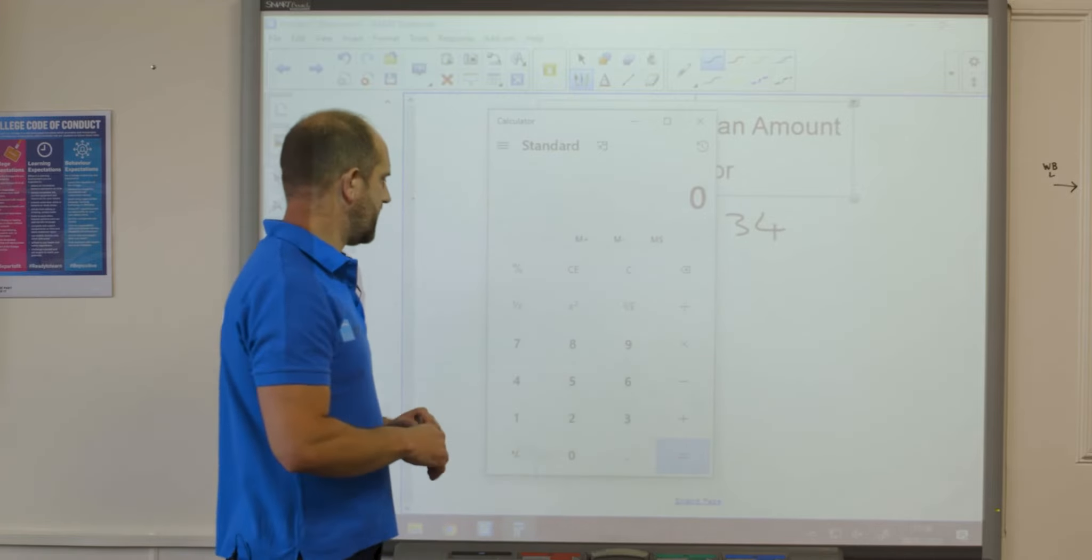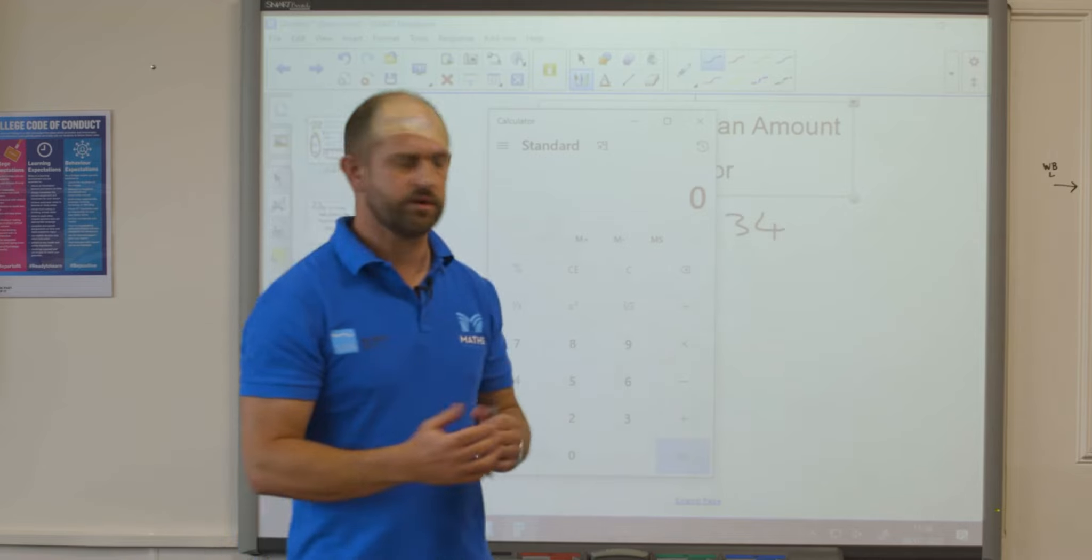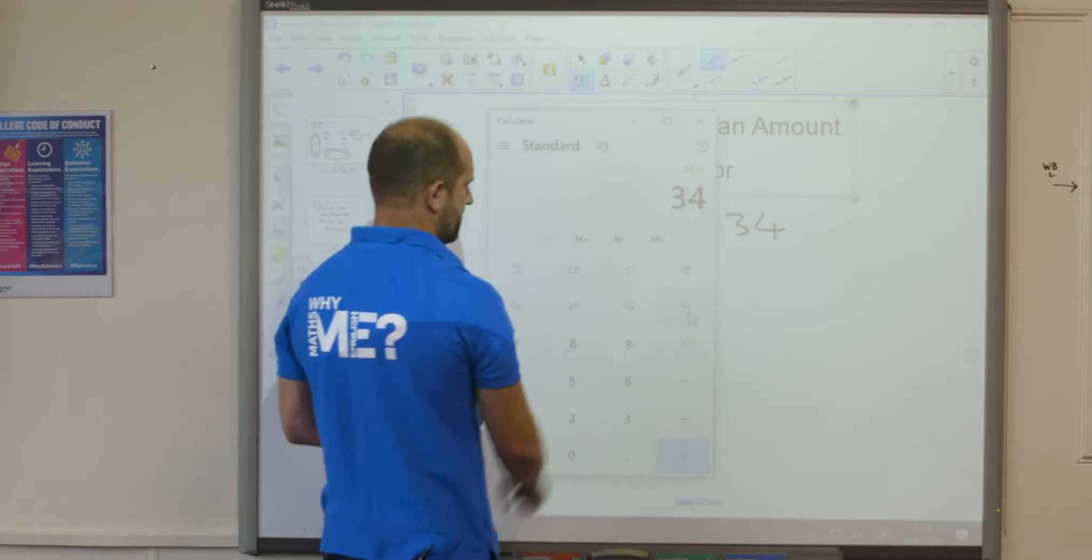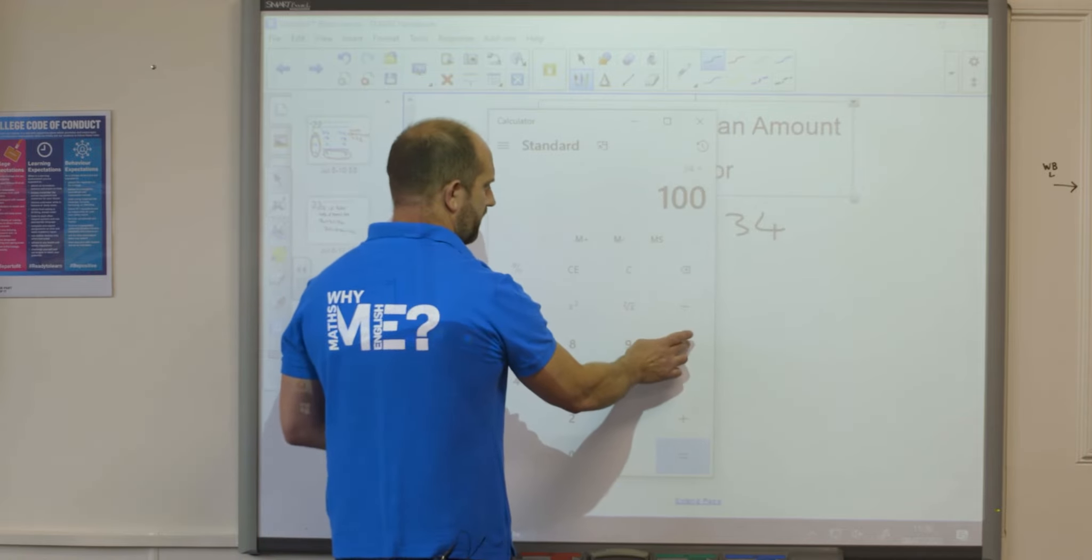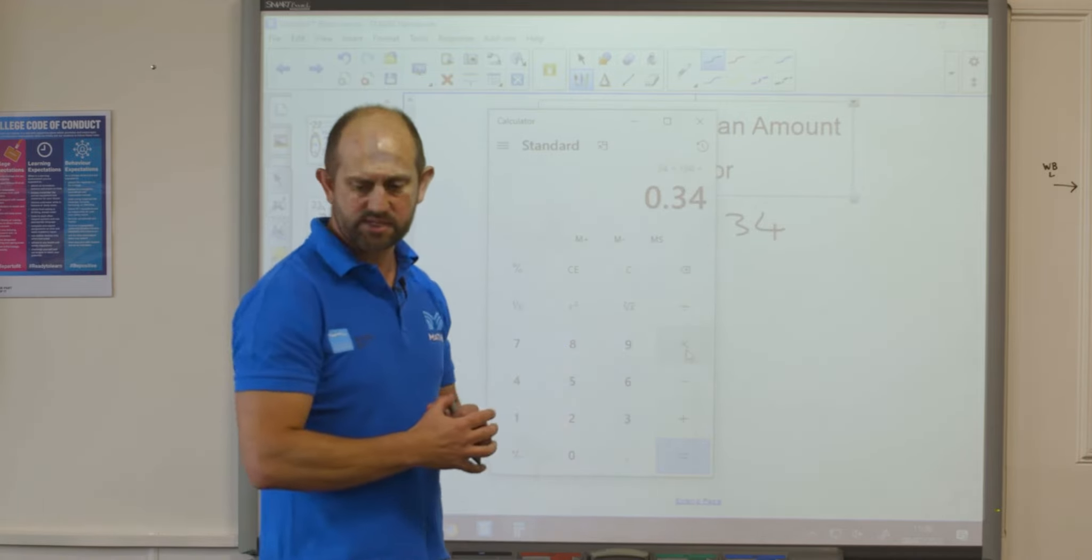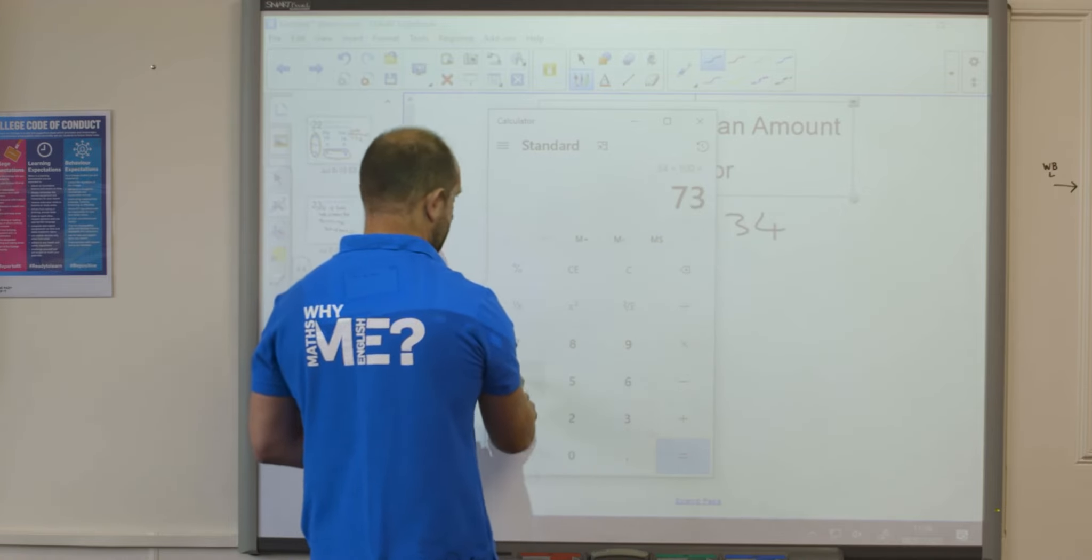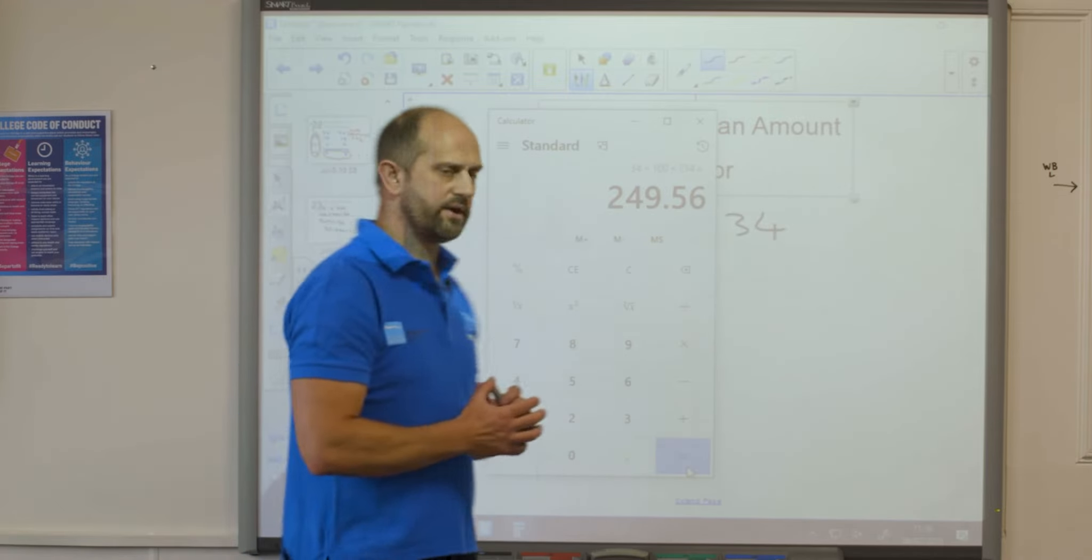A couple of ways of doing it. Remembering percentage is out of 100, so if I do 34 divided by 100, of means times in maths, times 734 equals 249.56.